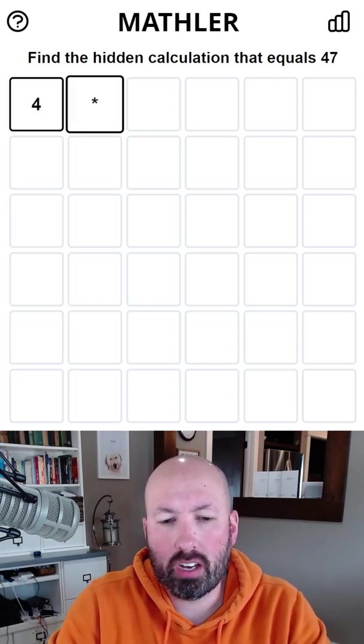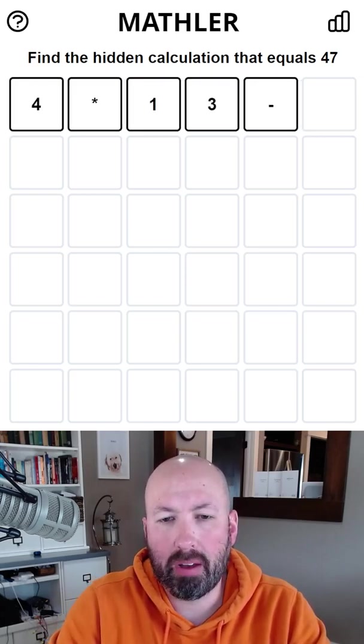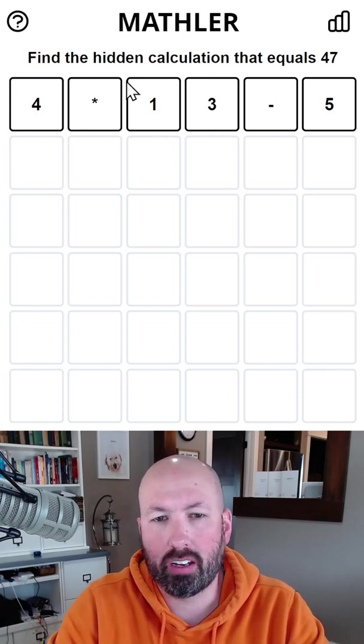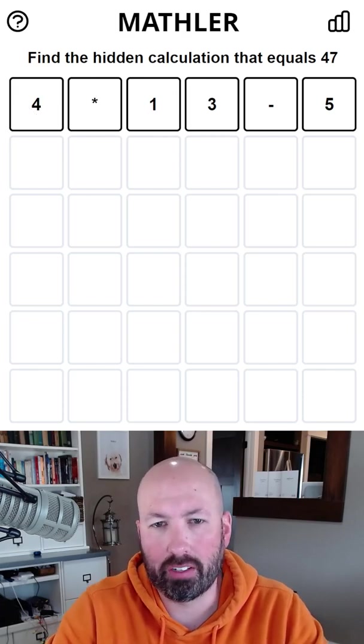I think I'm going to start with 4 times 13 minus 5. I like to do those smaller digits and that's going to let us check four different relatively small digits.